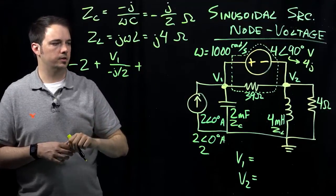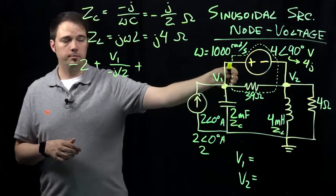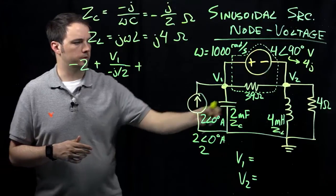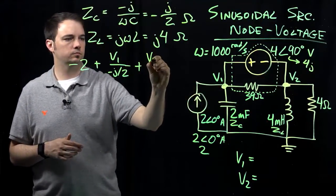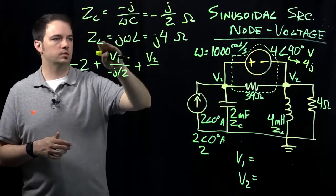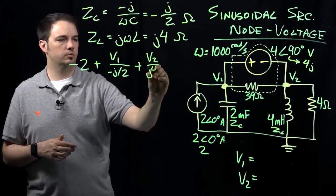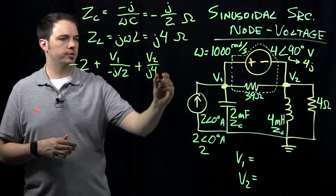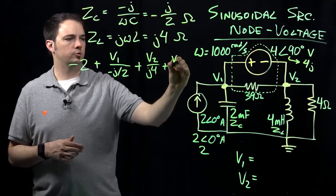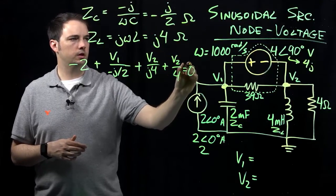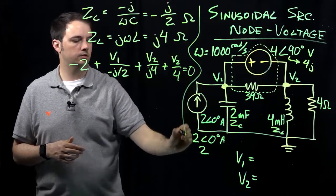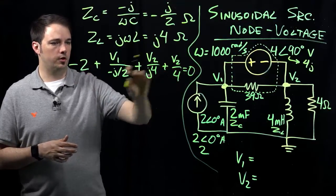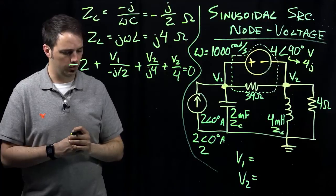Then I can add to this equation, because of the super node I can jump over to the second node and evaluate the current going down through my inductor. This would be the voltage v2 over the impedance of my inductor, which was given by j times 4. Then finally the current through my 4 ohm resistor over there would be plus v2 over 4, all that equals zero. This is our node voltage equation which we've been able to write with all of these terms due to the super node.